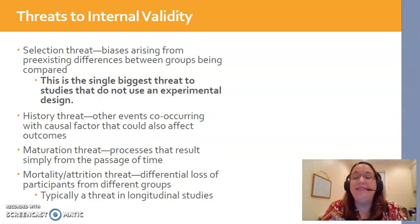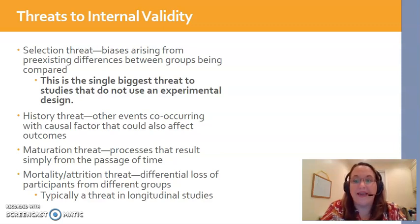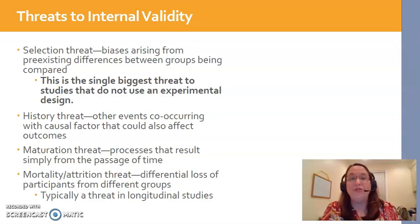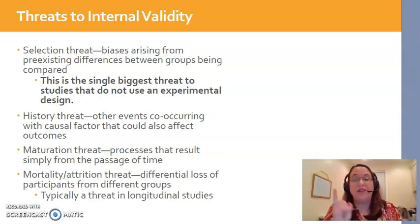Internal validity has to do with whether our independent variable caused changes in the dependent variable, or whether it was something else outside of the study. There are different types of threats and biases that can creep in and cause changes in my outcome of interest. If I do a weight loss intervention and my outcome is weight change, I'm hopeful that my intervention really made the changes in weight. But there are other factors that can influence an individual's weight — those are called confounding or extraneous variables. So in order to have good internal validity, I've got to make sure that the intervention caused changes in the outcome, and not something else.